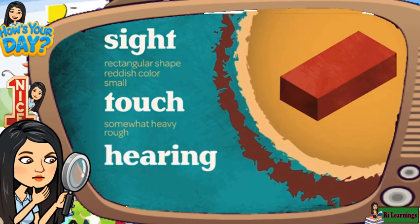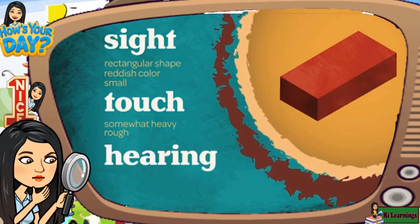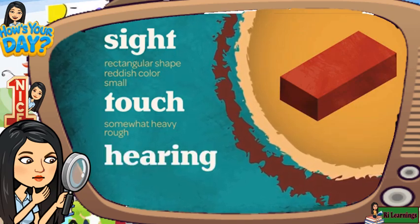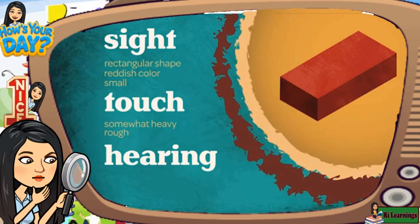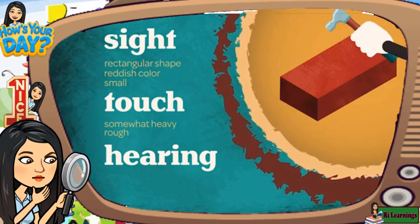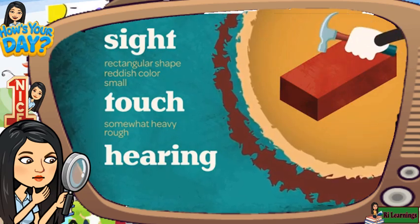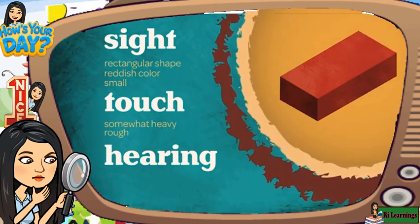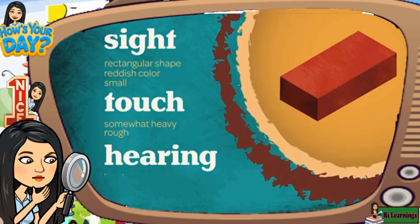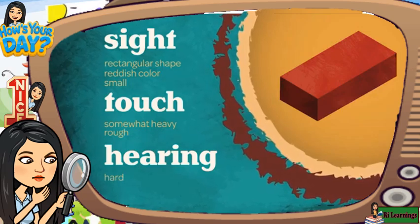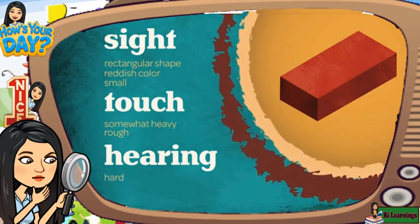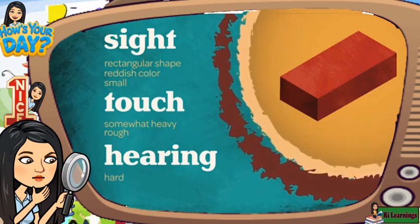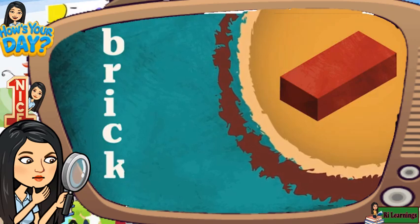Your sense of hearing can also help you make an observation about the object's texture. Tapping the object on a table or hitting it with a hammer makes a sound. This tells you that the object is hard. All of these observations help you recognize that this object is a brick.